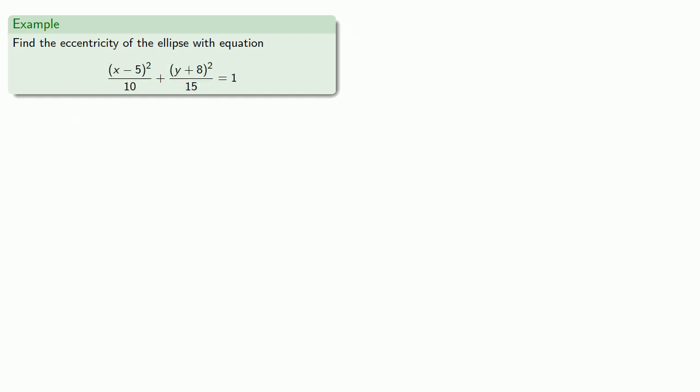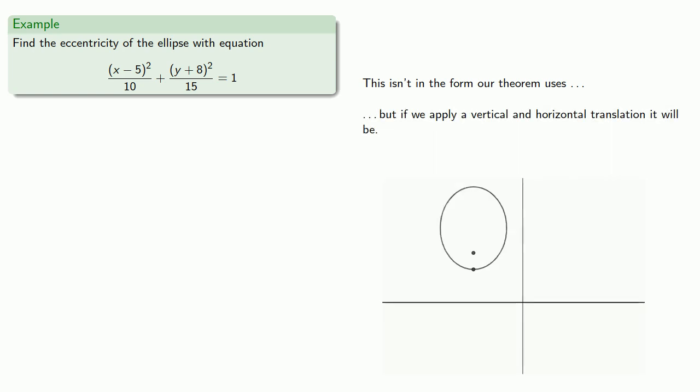Now, sometimes we may have to do a little bit of work before we can get our equation into a useful form. So this equation is not in the form our theorem uses, but if we apply a vertical and horizontal translation, it will be. And a translation won't affect the eccentricity.